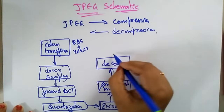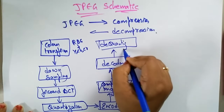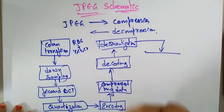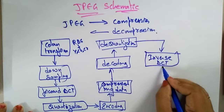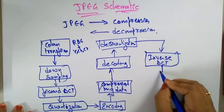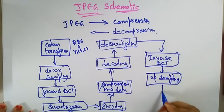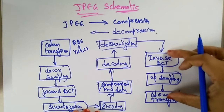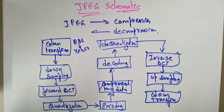After compression, if we want to decompress, we use the decoding technique. For decoding, you need to perform dequantization — reversing whatever quantization was applied. Then you apply the inverse DCT. After that, up sampling is performed, and finally color transformation is done again. This is the complete JPEG schematic for both compression and decompression.